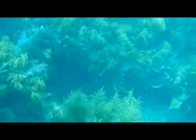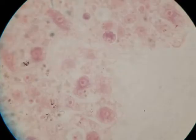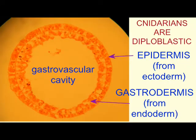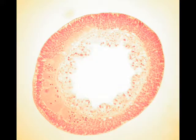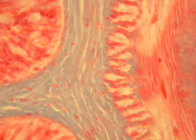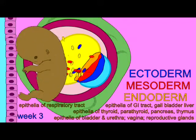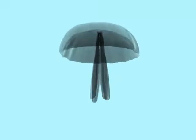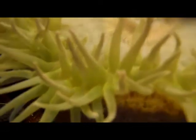A simple true-false question: cnidarians are diploblastic, not triploblastic — they're diploblastic. You could be asked to match the tissues to their functions, such as the gastrodermis, which is made of endoderm and lines the gastrovascular cavity, while the epidermis is made of ectoderm and lines the outside of the organism. To describe how cnidarians obtain food, you would include the idea of nematocytes, or stinging cells, which can help capture prey, especially when attached to tentacles.